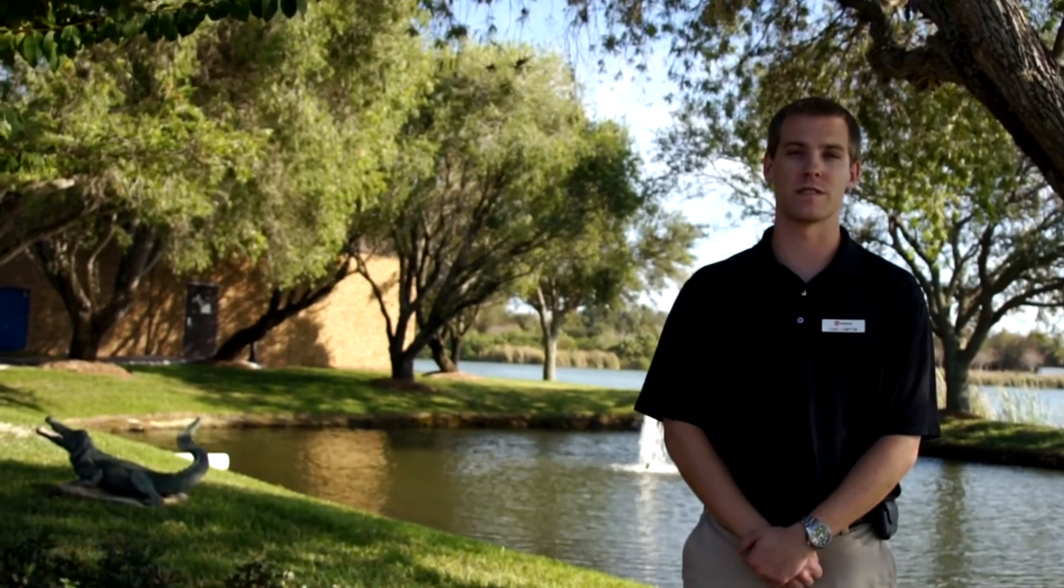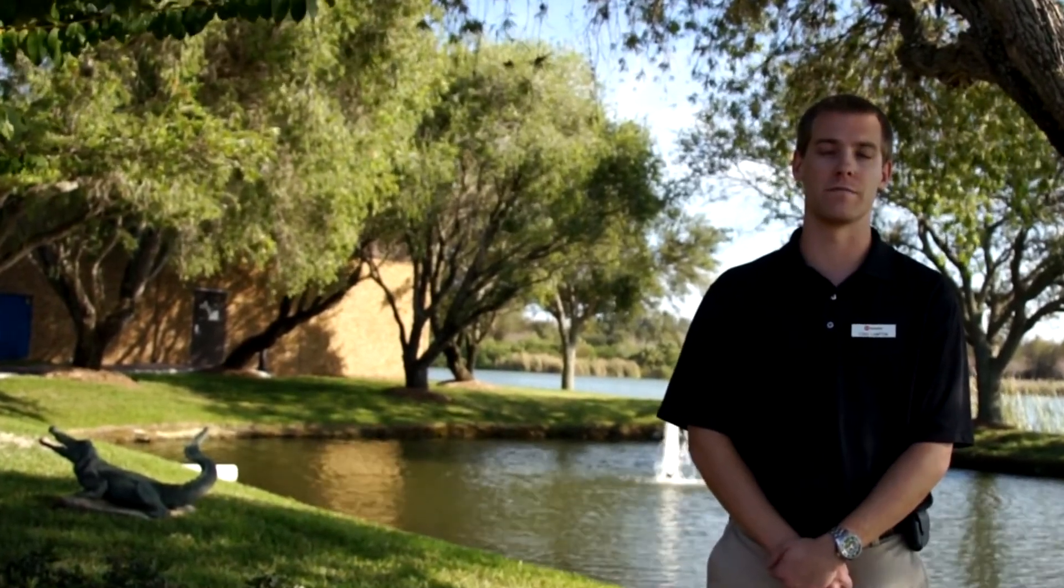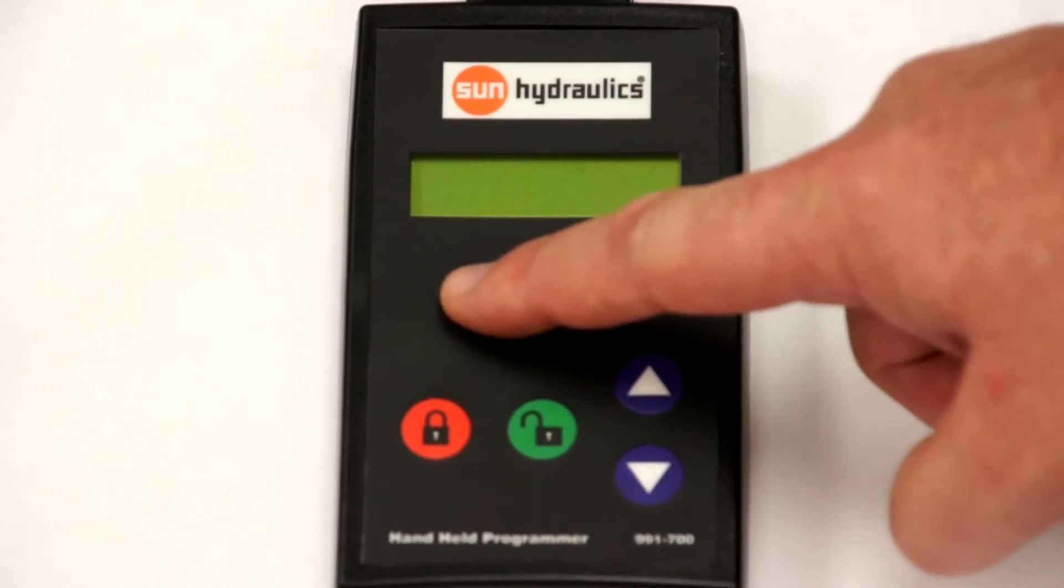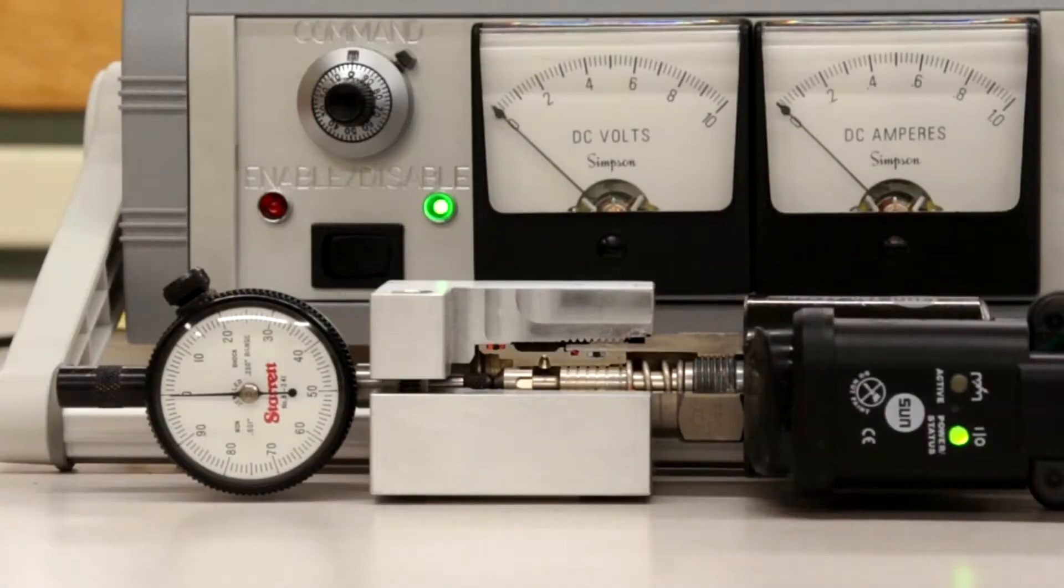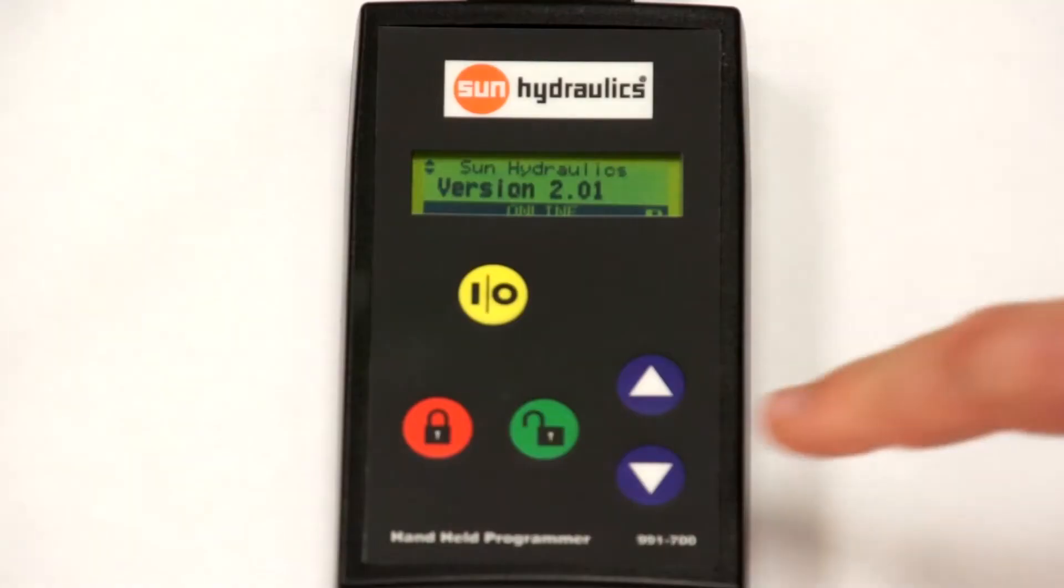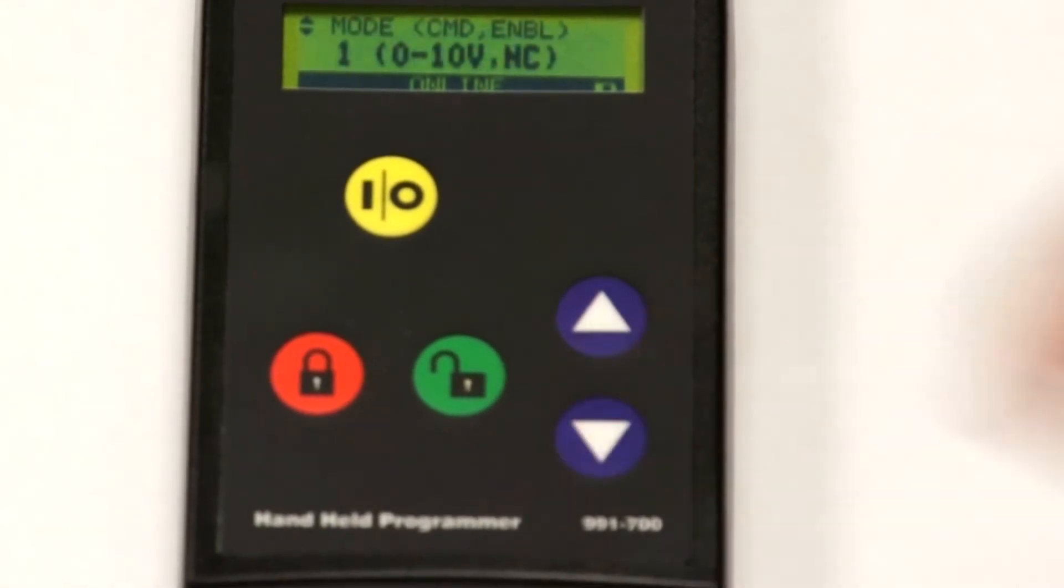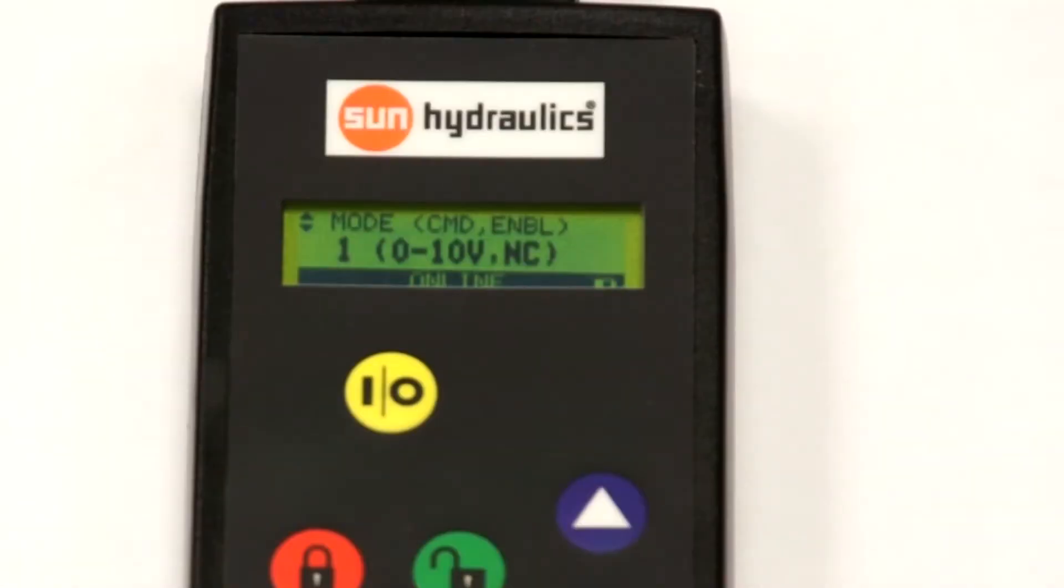Hello, my name is Chad Lampson, I work in the cartridge engineering group here at Sun Hydraulics. Today I'll be going over the 6 modes of operation of Sun's embedded amplifier. Turn on the handheld programmer with the embedded amplifier powered on. Scroll down using the down arrow until you see the parameter called mode of operation.